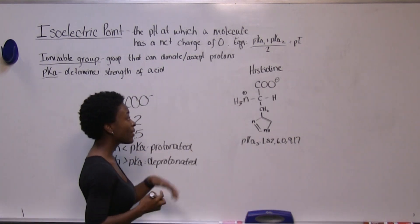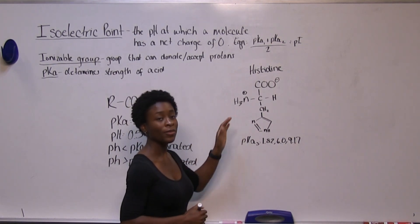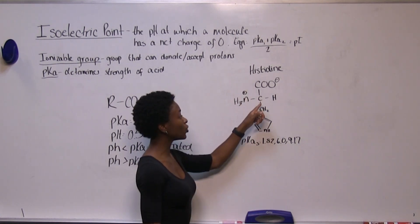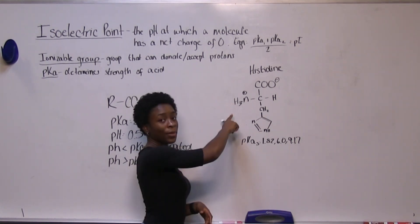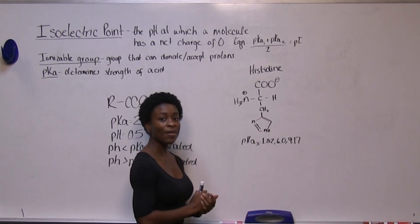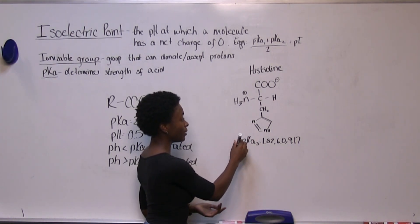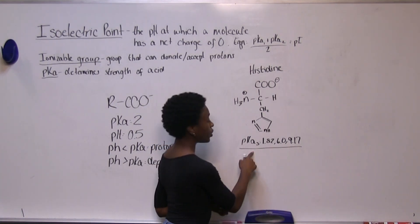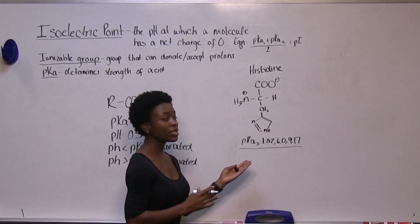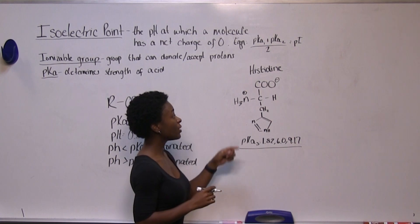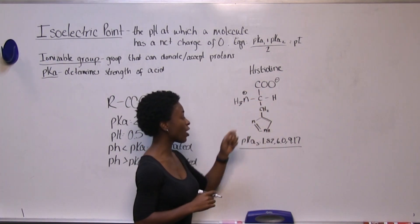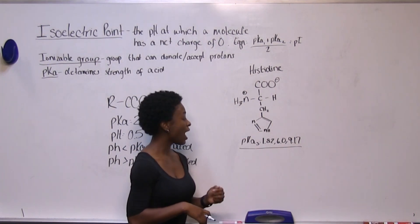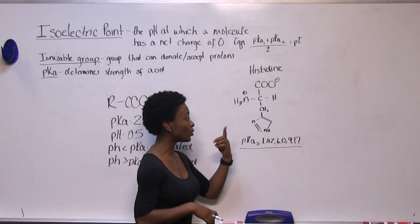Now let's look at histidine, an amino acid. This is the neutral form of histidine and histidine has three ionizable groups: one being the carboxyl group associated with the alpha carbon, another being the amino group associated with the alpha carbon, and then an ionizable group in the side chain at the nitrogen. pKa values in the one to two range are associated with the carboxyl group of the alpha carbon, pKa values around eight to nine are associated with the amino group of the alpha carbon, and the six is the ionizable group of the side chain.